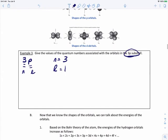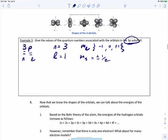So we know that M sub L is going to have values that are possible from negative 1, 0, and positive 1. And then M sub S could have values that's either plus or minus 1 half. So what this question is asking is, what are the values of the quantum numbers associated with the electrons in these orbitals?